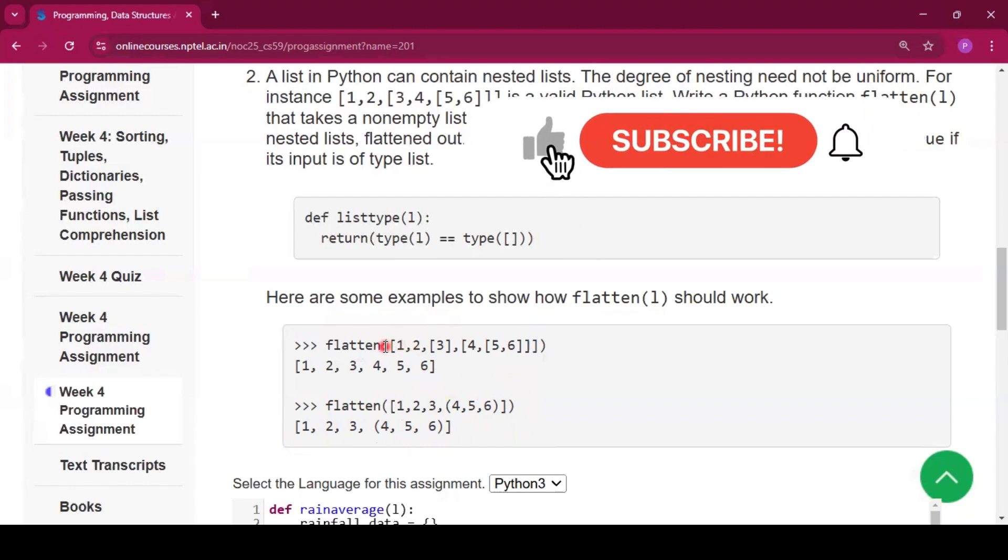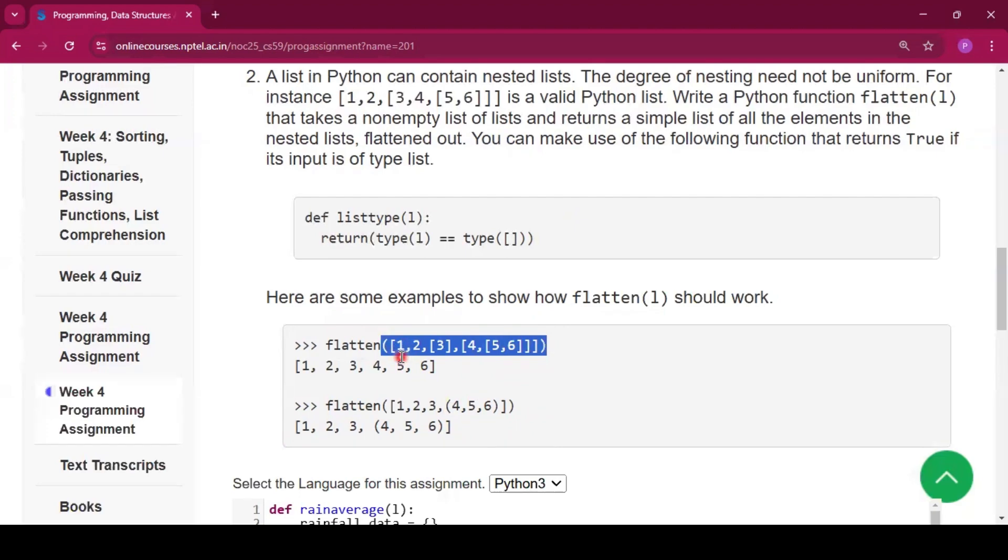Now for this case, 1, 2, 3, 4, 5, 6. So this total data, that means 1, 2, 3, 4, 5, 6 inside the bracket, all are the list. That means because it is inside one third bracket. But we have to remove each square bracket which is there inside one list.